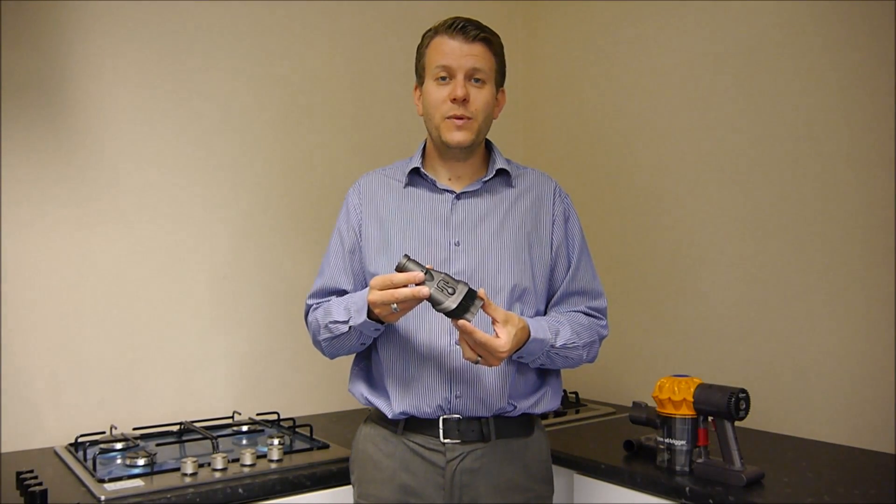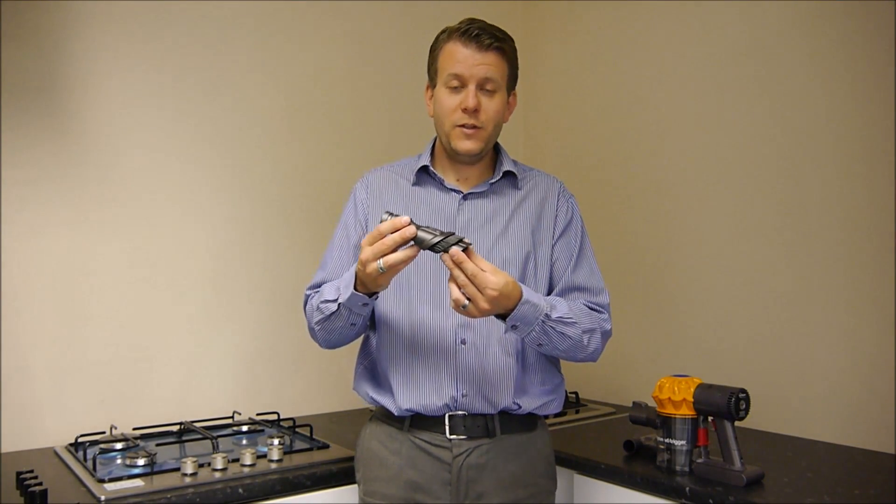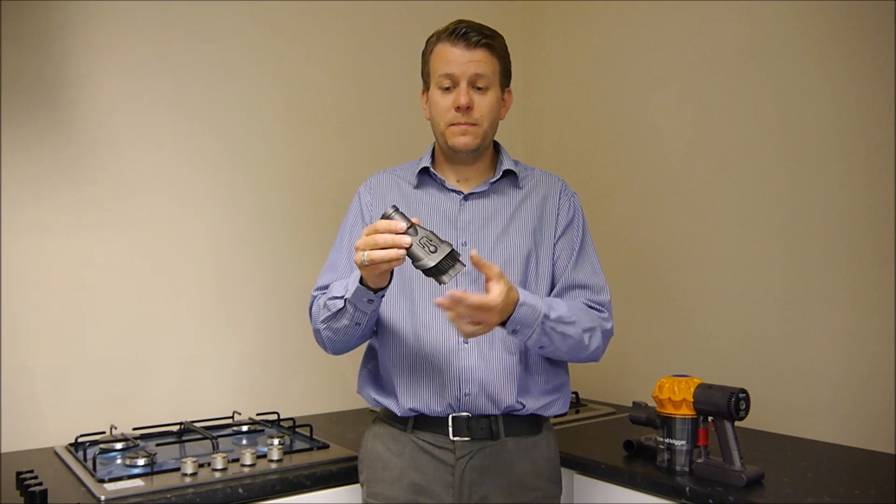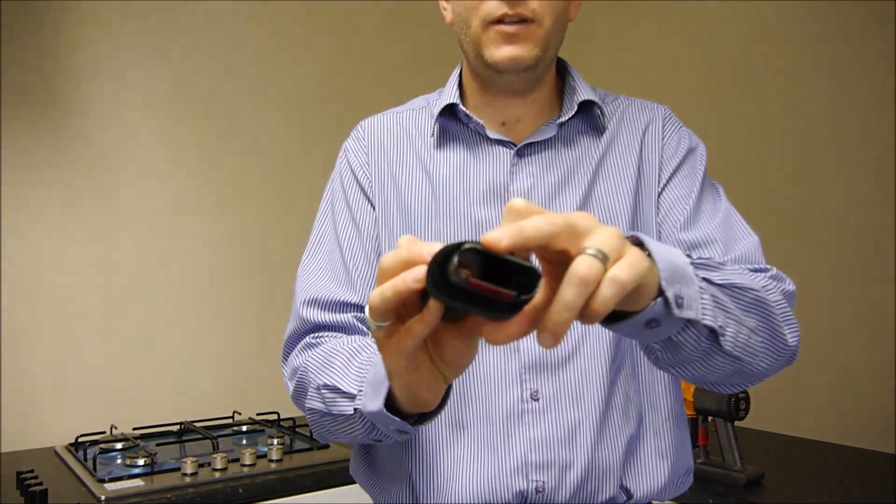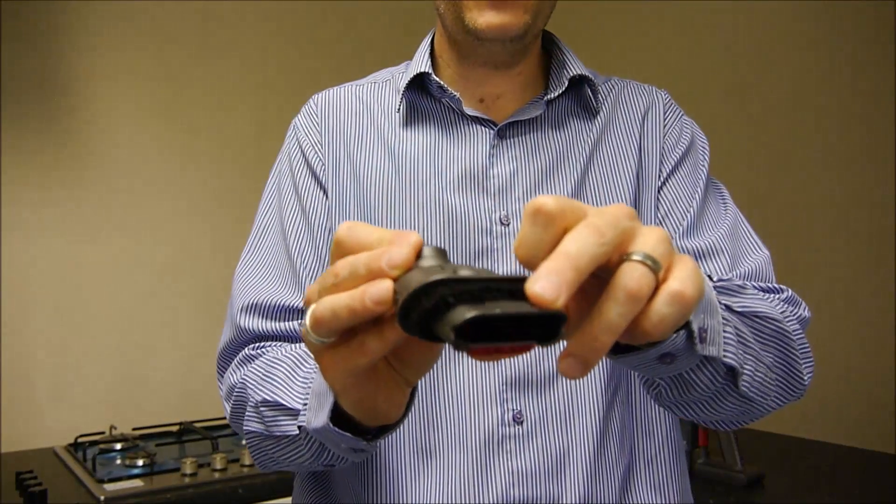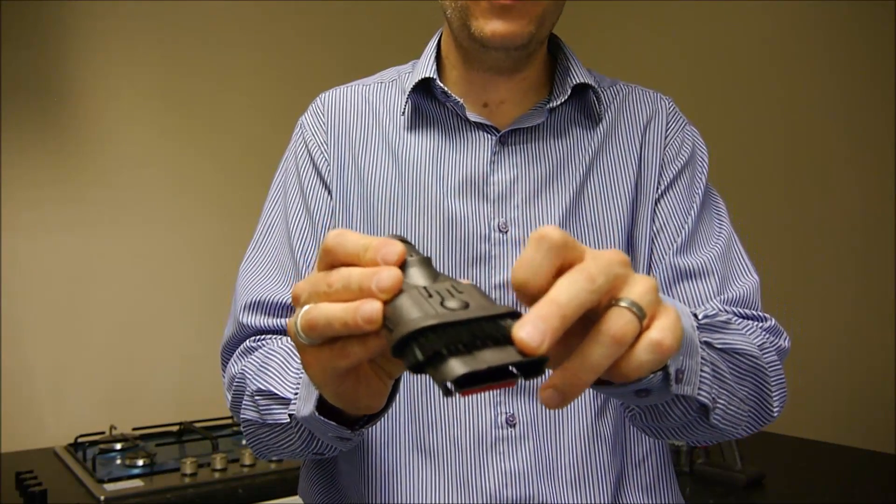Now with this model it comes with a couple of different tools. The first one is the combination tool, and what this does is first of all you've got the nozzle at the end. This is very good if you're using it for a table, for example, to get crumbs up.